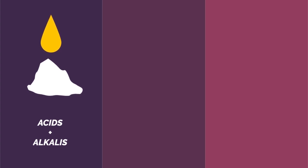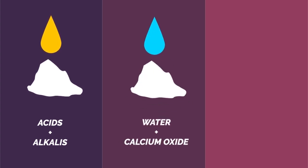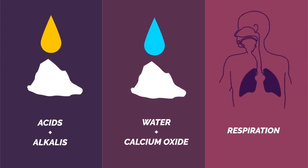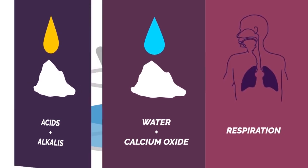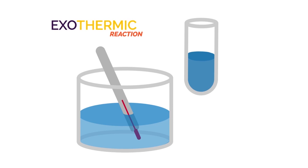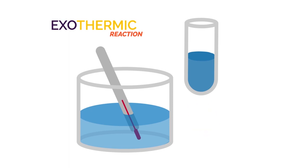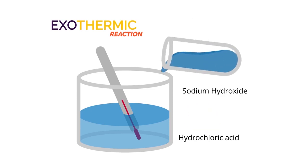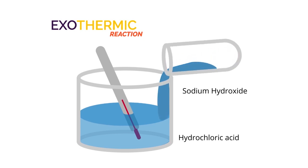Other examples of exothermic reactions are neutralization reactions between acids and alkalis, the reaction between water and calcium oxide, and respiration. It is easy to detect exothermic reactions — just get a thermometer and see if the temperature increases.